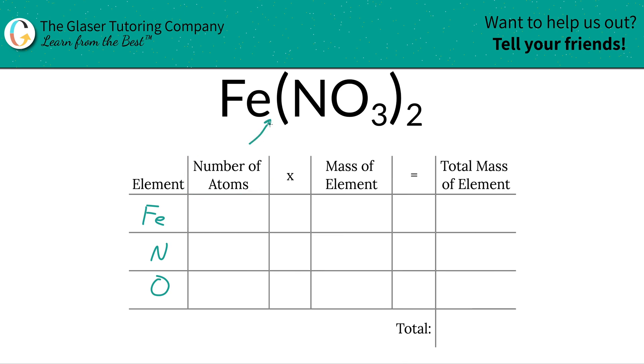come into play. So if you don't see a subscript at the bottom of a particular element, that means there is only one of them. So one iron. Nitrate also there's one, but nitrate is tied into this nitrate polyatomic anion and we have two of them, so therefore we'd have two nitrogens. In other words,